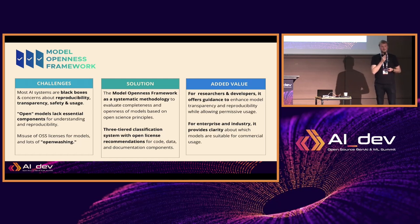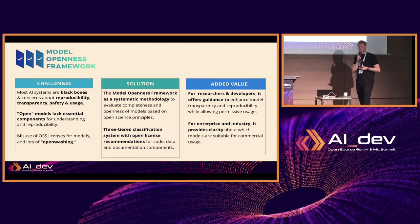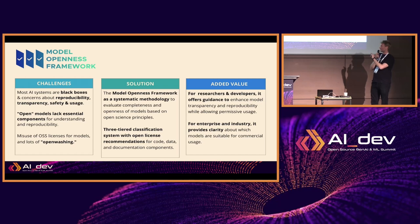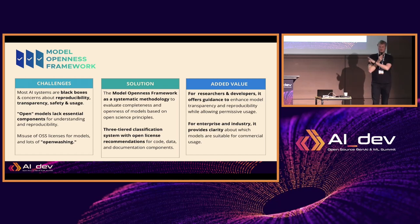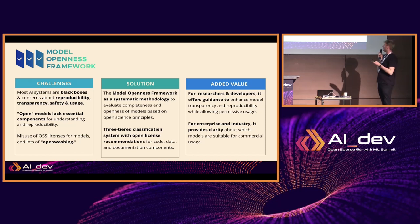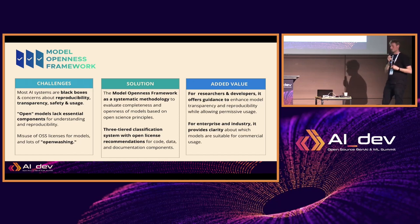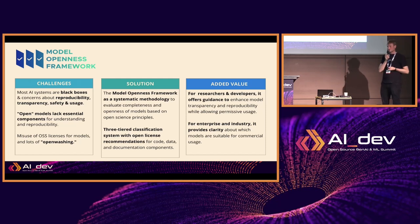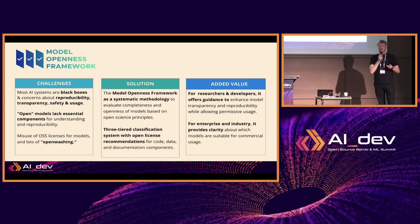In a nutshell, most AI systems and open models that are shared are black boxes — creating a lot of problems for reproducibility, transparency, safety, ethics, and usage. The majority of open models are not enterprise-ready because of these problems. Our solution is the Model Openness Framework, along with the tool that Matt will introduce. It's a systematic methodology to evaluate the completeness and openness of models. We've developed a three-tiered classification system with open license requirements for the 17 components, offering guidance for model developers and providing clarity for enterprise users.